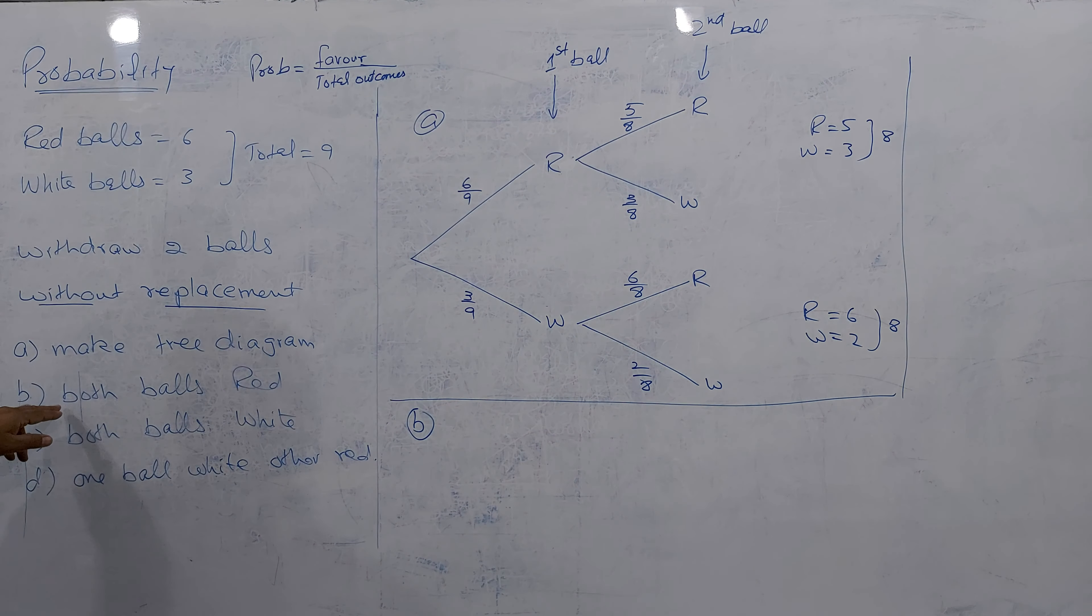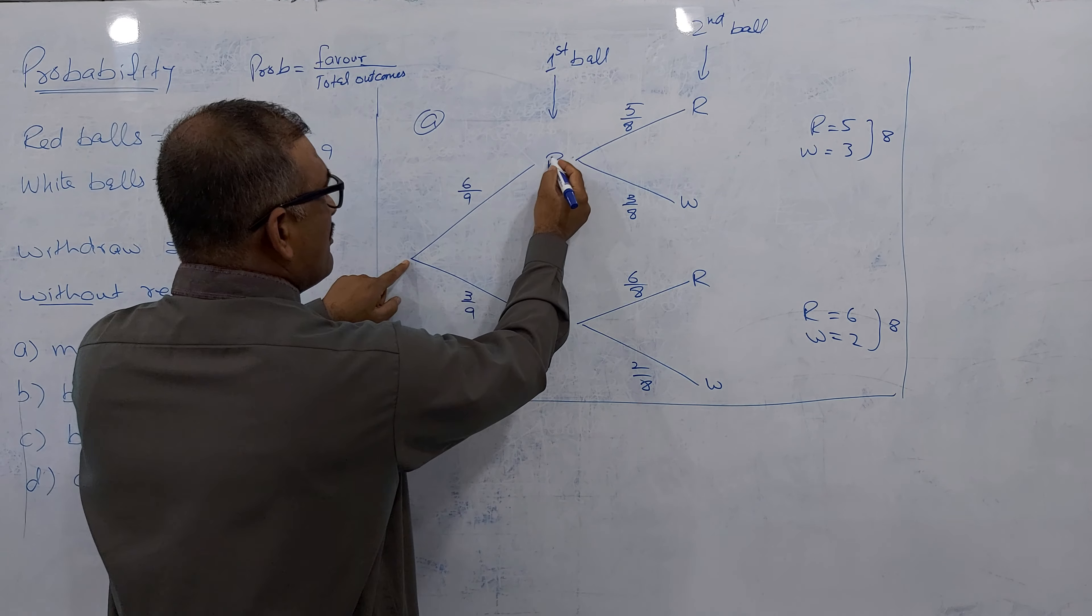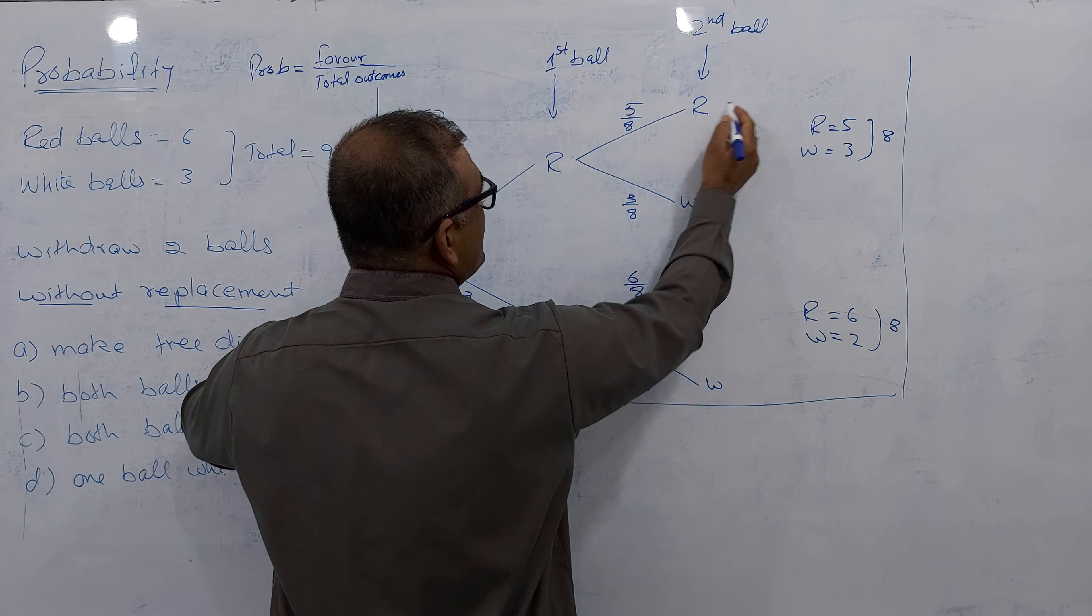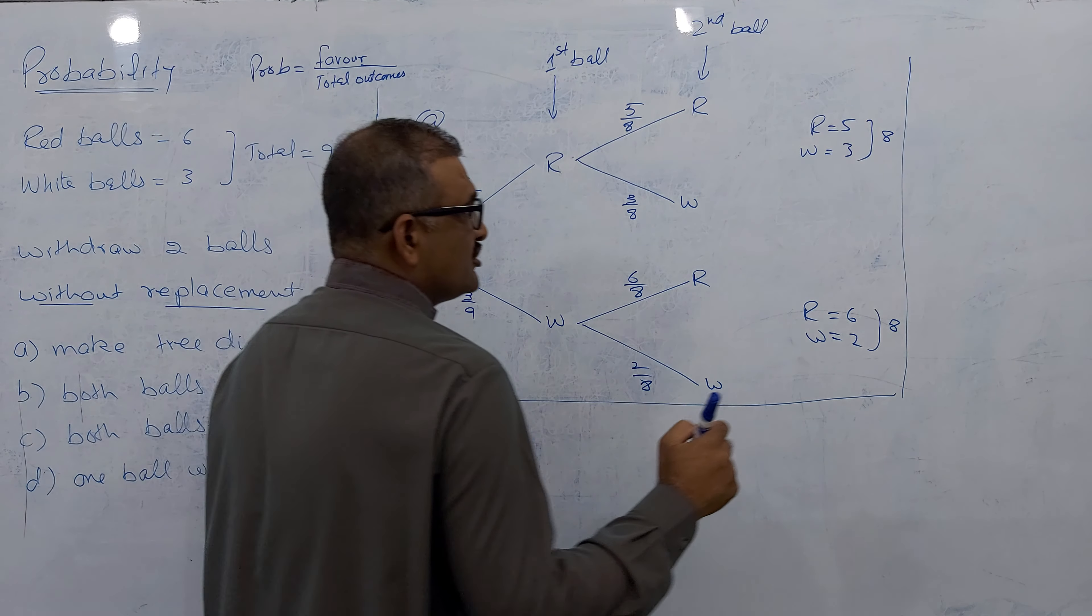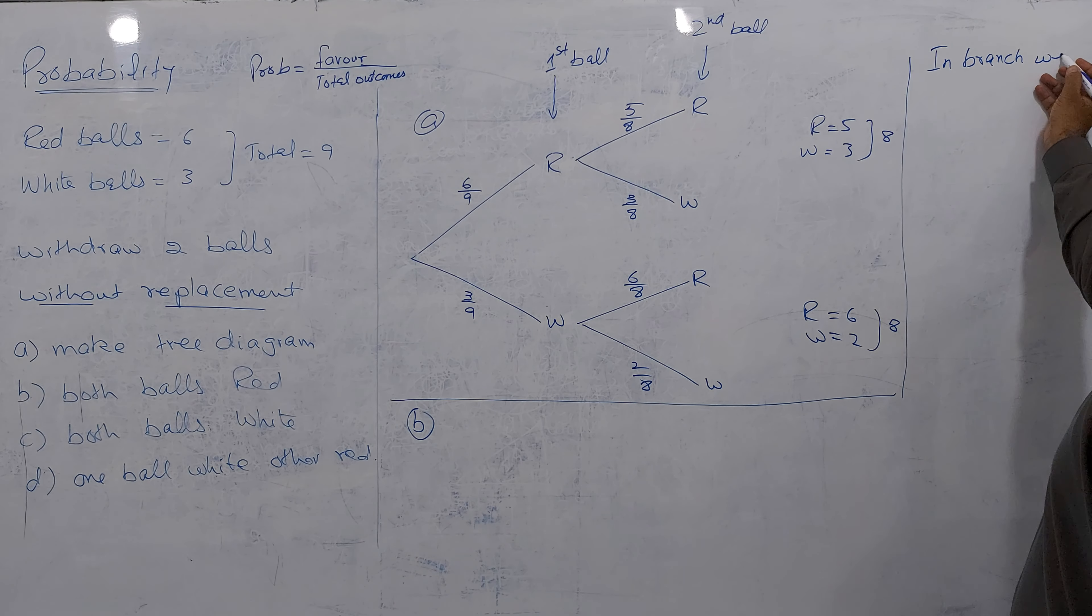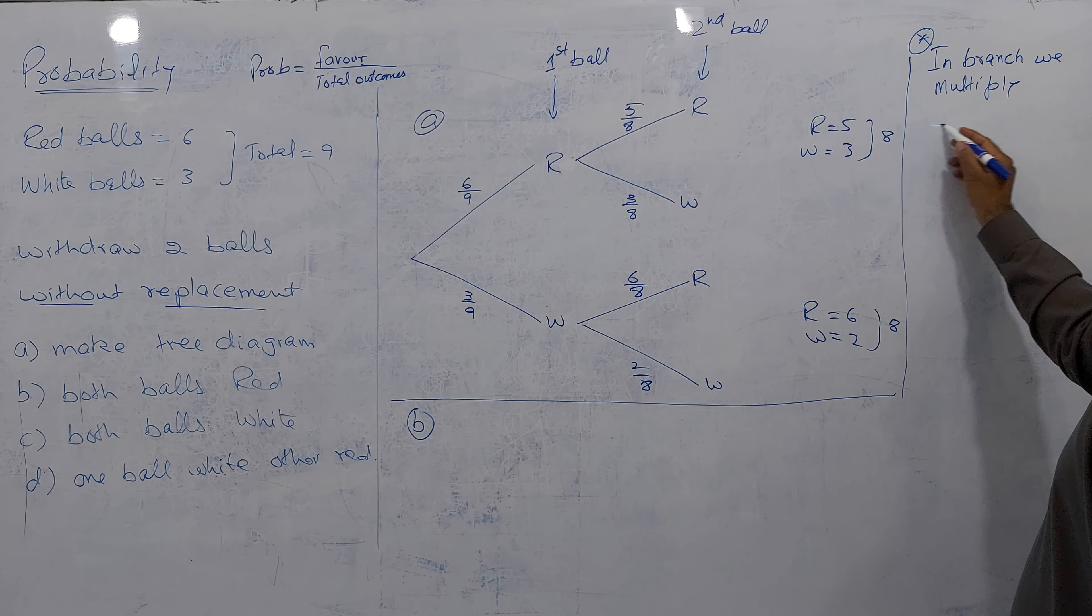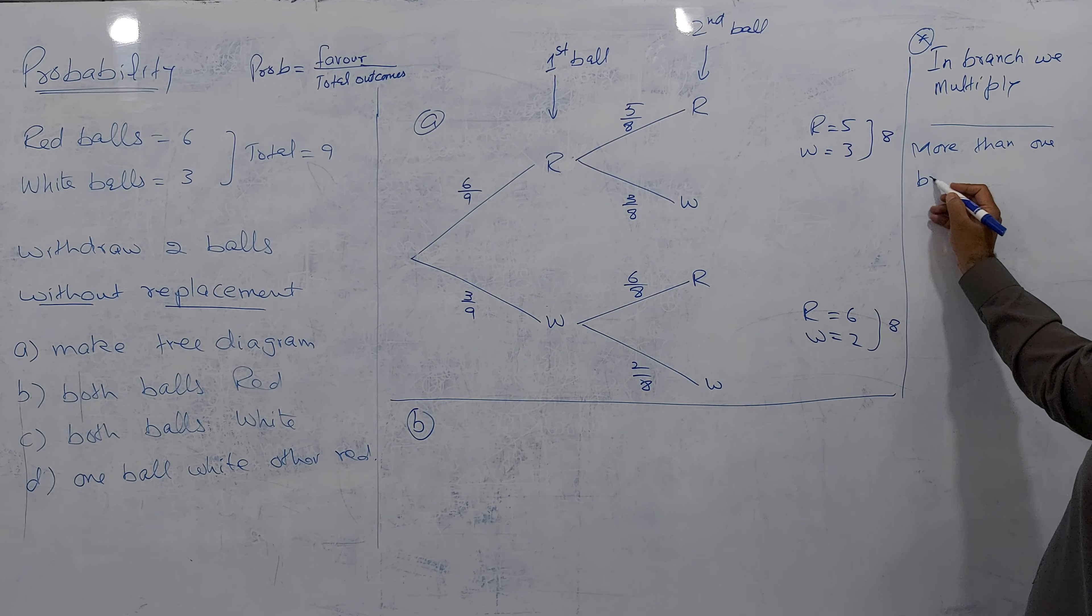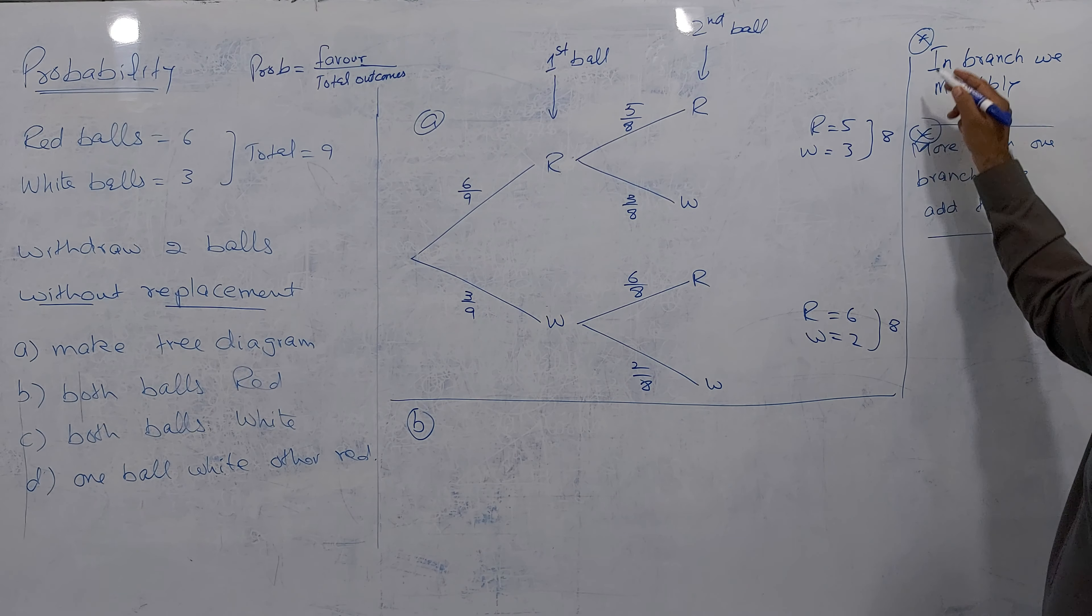Let's talk about the B part. B part both balls red. I'll tell you one thing from here. This is called 1st branch, this is called 2nd branch, this is called 3rd branch, this is called 4th branch. Heading is what? In branch we multiply, we multiply always. And the key point here: more than 1 branch, we always add, we add them. This is a basic criteria, star number 1 and star number 2.